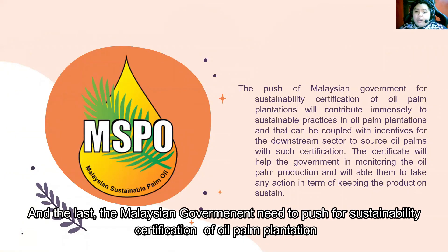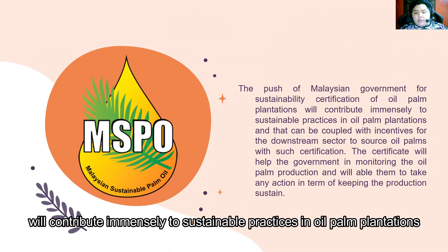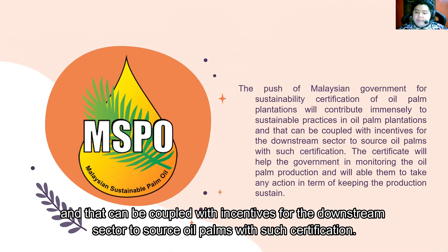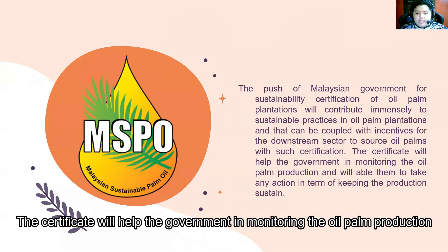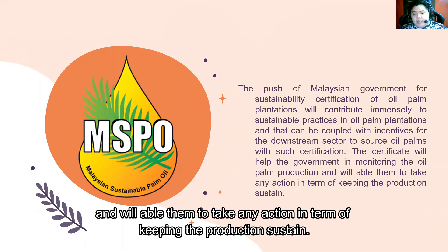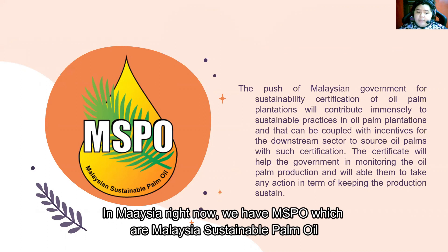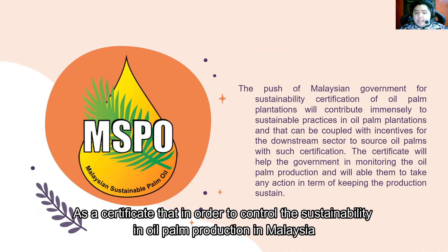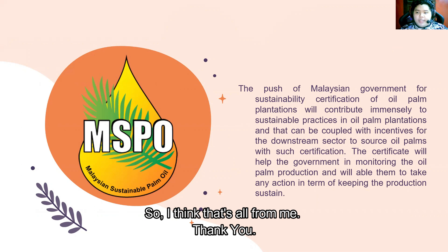The last solution is that the Malaysian government needs to push for sustainability certification of oil palm plantations, which will contribute immensely to sustainable practices. This can be coupled with incentives for the downstream sector to source oil palm with such certification. The certificate will help the government in monitoring production and taking action to keep it sustained. In Malaysia, we currently have the MSPO — the Malaysian Sustainable Palm Oil — as a certificate to control sustainability in oil palm production.